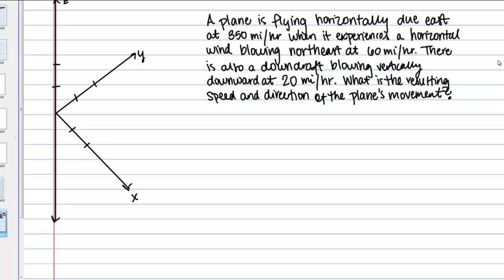Let's start by sketching these different vectors on our XYZ coordinate plane. First of all we're told a plane is flying horizontally due east at 350 miles per hour. Let's establish our directions here. Generally the positive Y axis is considered to be north and the positive X axis is considered to be east.